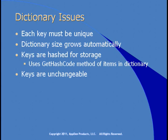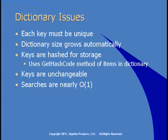Keys are unchangeable. Once you've added a key-value pair to the dictionary, you can't change the key, because it would be associated with the wrong place in the hash table. Searches are nearly O(1) — the size of the dictionary doesn't really affect the time it takes to find things. The more unique the hash codes are, the faster the lookup. More collisions mean the dictionary uses an internal algorithm for collision resolution, which adds time to searches.